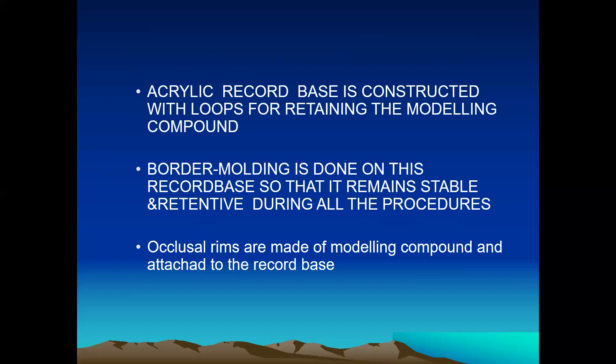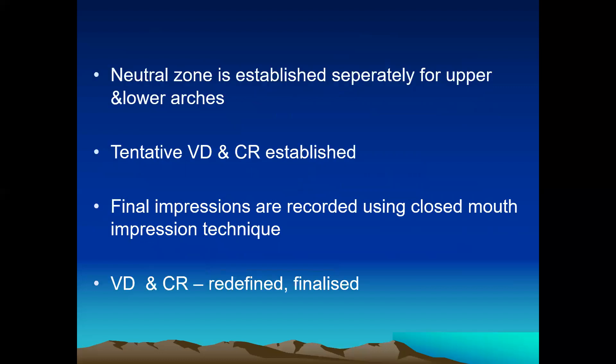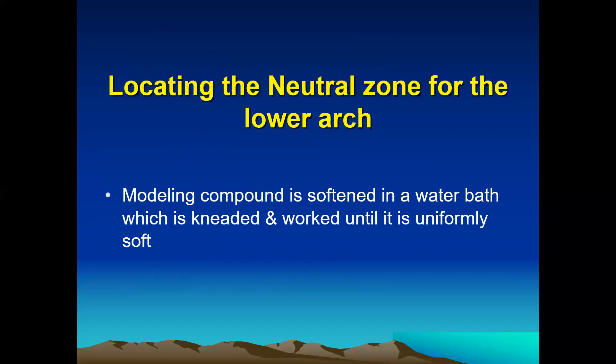Then the occlusal rims are made of modeling compound and attached to the record base. We have to record the neutral zone separately for upper and lower arches. Then the tentative vertical dimension and centric relation recording is done, and only then do we take the final impression using the closed mouth impression technique. After that we verify the vertical dimension and centric relation recording and finalize it. These are the major steps in the neutral zone recording technique.